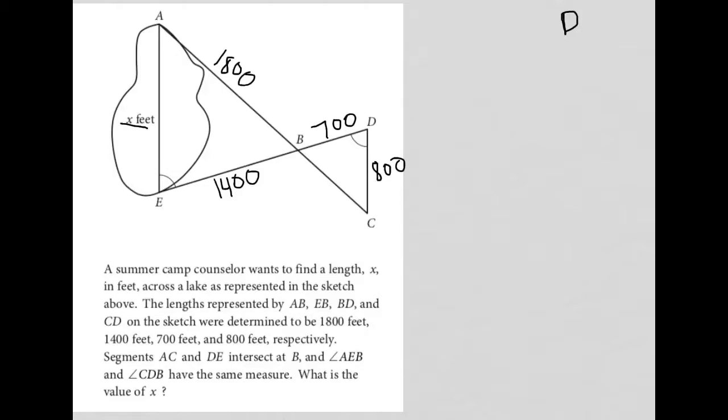Segments AC and DE intersect at B, so we see that, and we would know that means that these angles are the same, because they're vertical angles, so that's labeling with things I know. I'm not sure if it'll be helpful, but I do know that that would be a fact. And angle AEB and angle CDB have the same measure, so that's already given to us there. What is the value of X? All right, so we have this diagram.